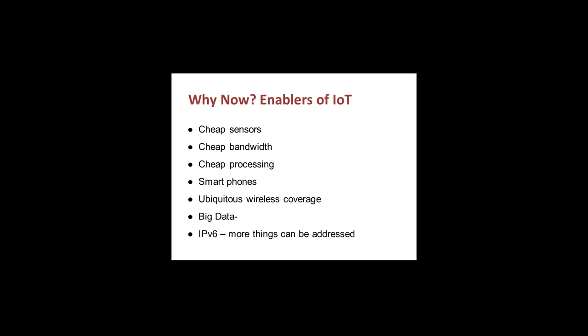Smartphones provide built-in intelligence that can be used in IoT implementation. Wireless coverage is now available in major towns in certain areas, where the net is always available. One of the current government's ambitious projects is to build smart cities — the basic definition of a smart city is one where internet connectivity is always available from any location. Big data is the ability of cloud computing to collect, process, and get insights from large quantities of data. And finally, IPv6 allows more things to be addressed — because of big data and IPv6, IoT is possible today.